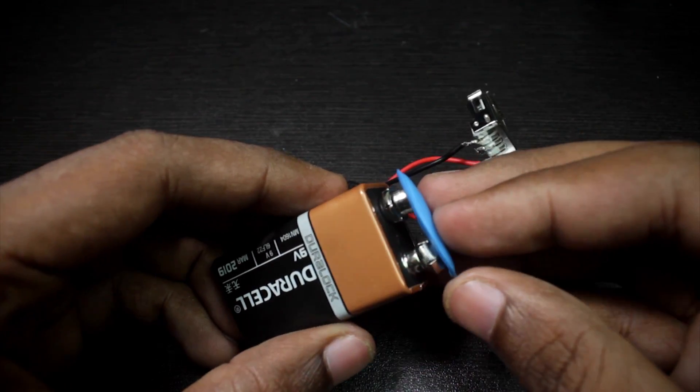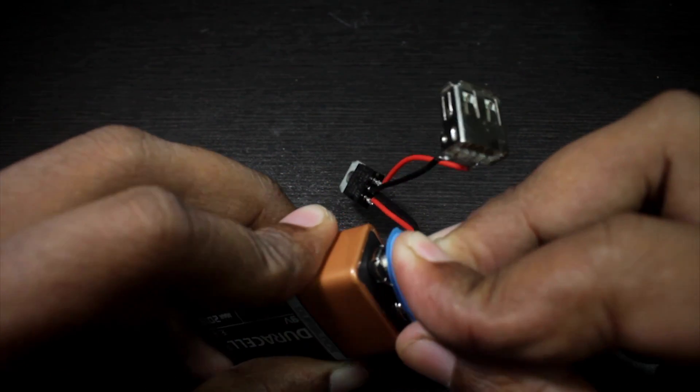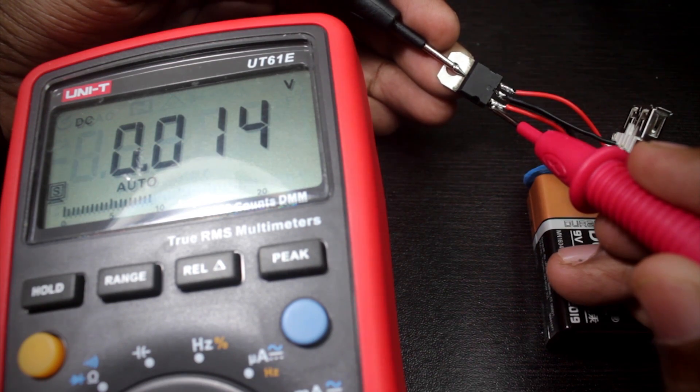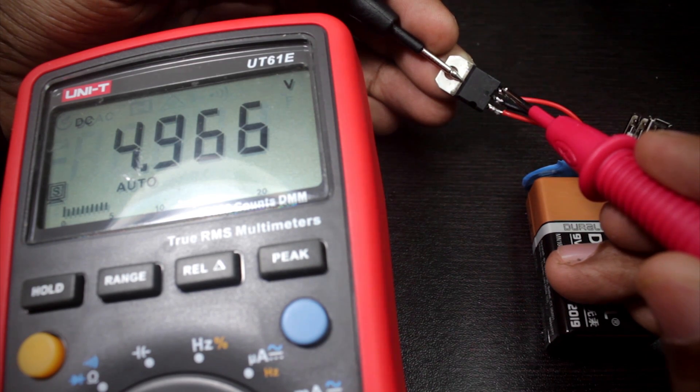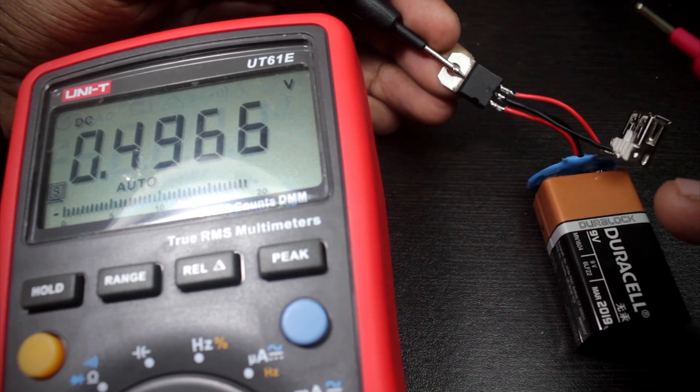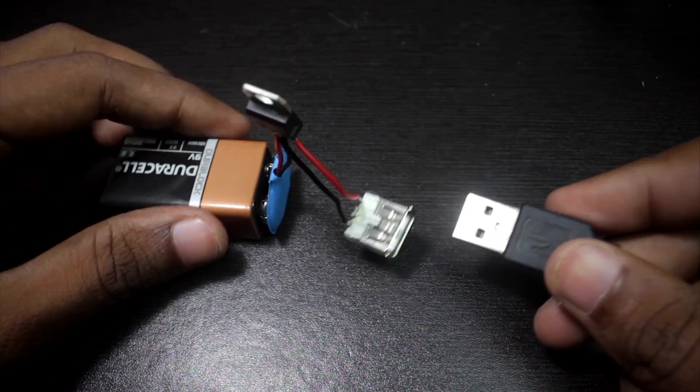Now let's plug in the battery and check the voltage of the circuit. 9 volts is going in the input pin and on the output pin we have almost 5 volts, perfect. Now we can connect our phone to see if it's actually charging, and yes it is charging my phone, amazing.